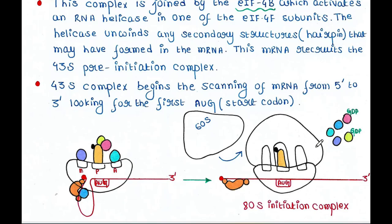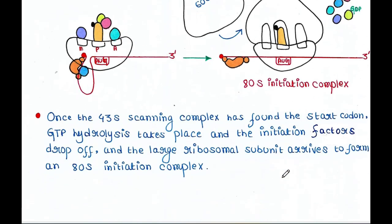So here, the two ribosomal subunits are there and the tRNA is there. This is the initiator tRNA. It is complementary to the start codon AUG. This is 80S initiation complex.